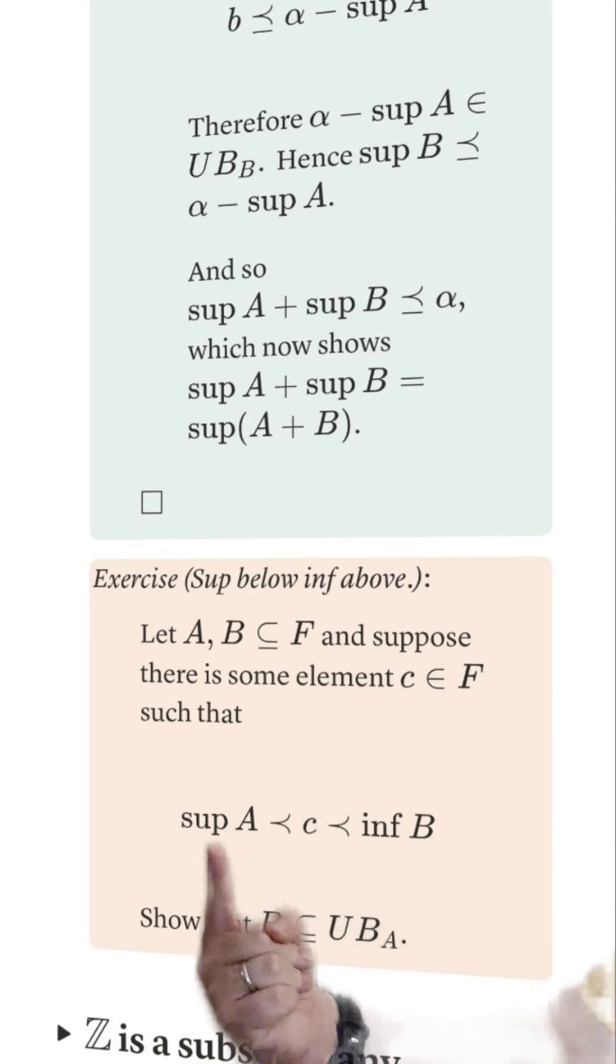Suppose that some element C separates sup A from inf B. Show that every element of B must be an upper bound for A.